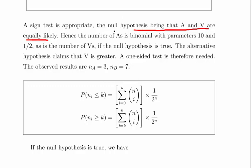So hence the number of A's is binomial with parameters 10 and 1/2, as is the number of V's if the null hypothesis is true.